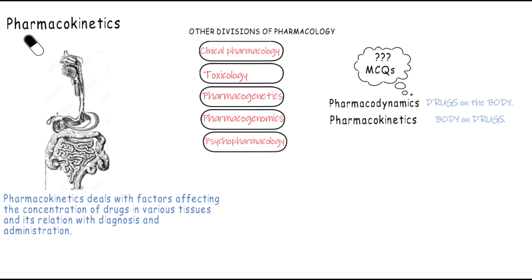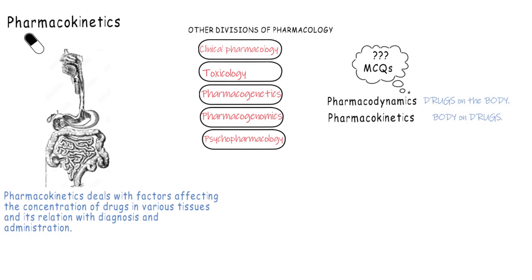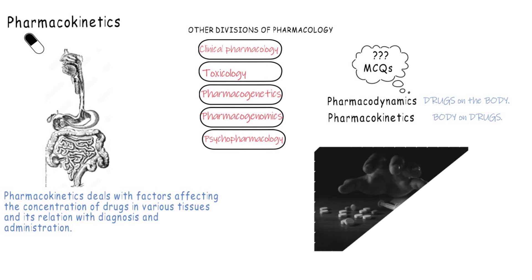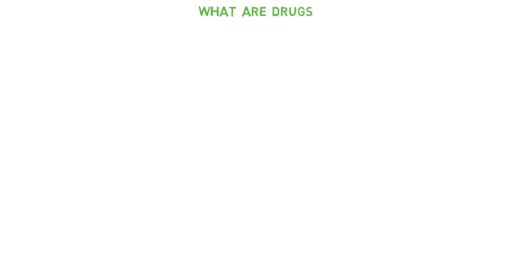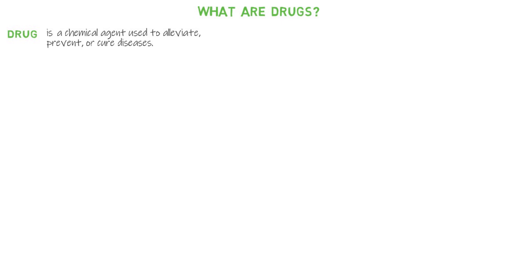When we hear about drugs, our minds often shift to illegal substances like heroin and cocaine, but in this course the term has a wider meaning. A drug is a chemical agent that can be used to alleviate, prevent, or cure diseases, and drugs are beneficial for treating and maintaining health.